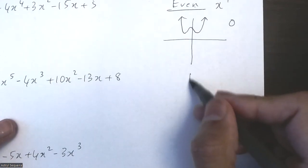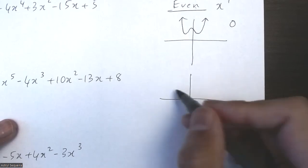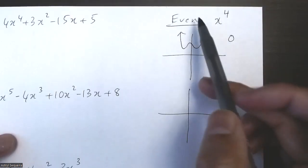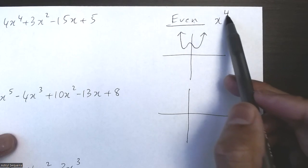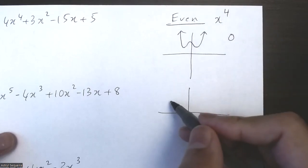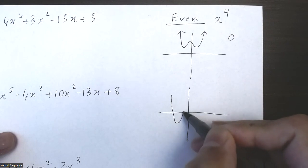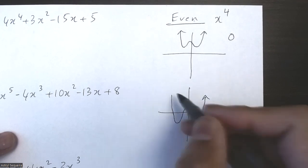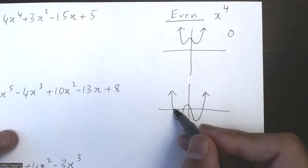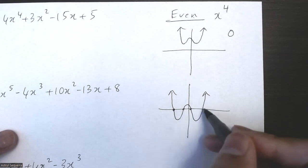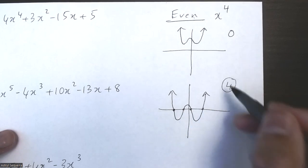Let's think about the maximum number of zeros. So I know that an even function of degree 4 has three turning points as a maximum. If you don't understand why, you can look at my video about turning points. But this function has a maximum of three turning points, and if we have three turning points, we can have a maximum of four zeros.